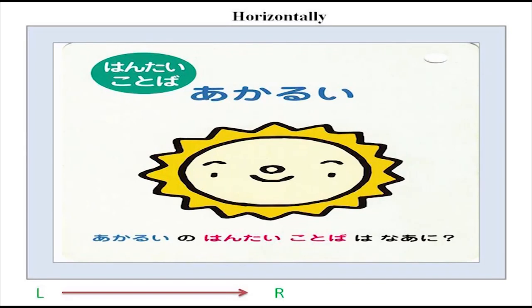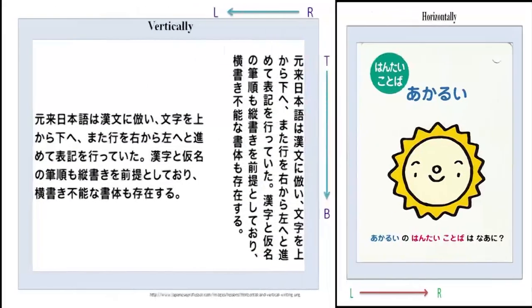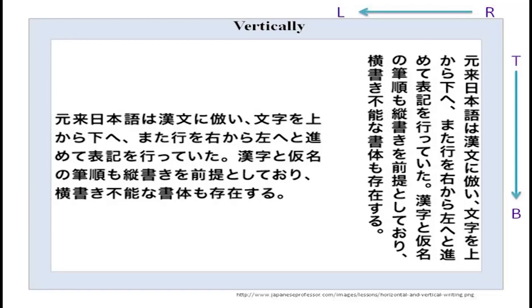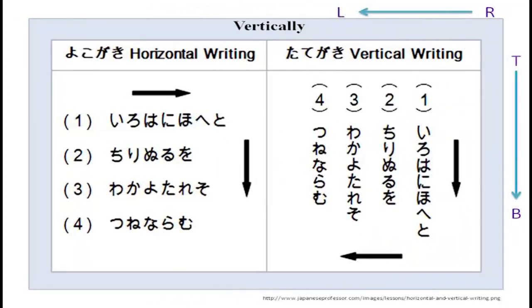Japanese is written horizontally and vertically as well. You can see it written horizontally and also written vertically. When writing vertically it starts from the right side — please remember, not from the left side. That is very very important. When you write horizontally, it starts from the left side.